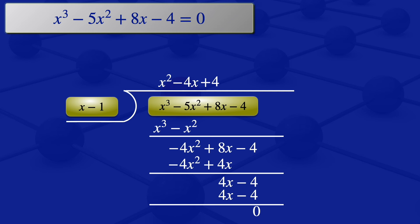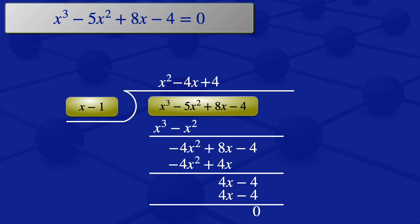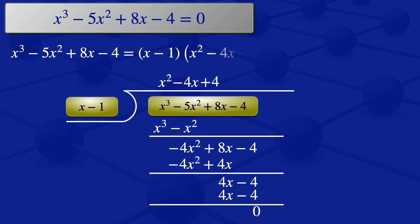The quotient is x squared minus 4x plus 4. This means that when we multiply x minus 1 by this quotient, we get the original expression. So x cubed minus 5x squared plus 8x minus 4 equals x minus 1 multiplied by x squared minus 4x plus 4.